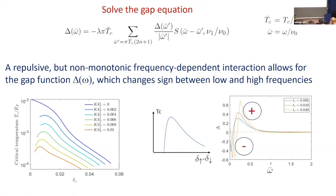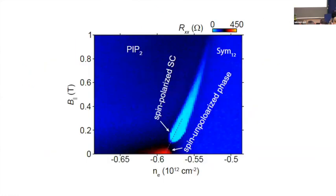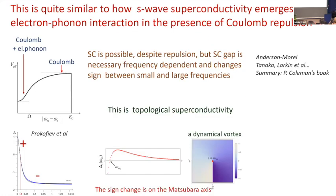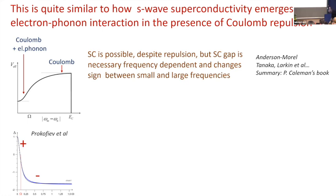This physics has a threshold: there is a critical field at which superconductivity appears, it passes through a maximum, then disappears at high field — consistent with experiment. This is also a textbook example: it's the same situation as getting s-wave superconductivity for electron-phonon interaction in the presence of much stronger Coulomb repulsion. The interaction always remains repulsive but becomes frequency-dependent, decreasing at low frequencies due to electron-phonon interaction, and when you solve for the gap you get a plus-minus sign-changing solution.